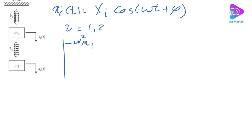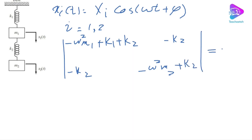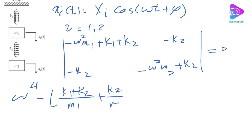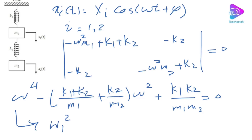Setting that determinant equal to zero gives us the characteristic equation: omega to the power of 4, minus [(k1 plus k2)/m1 plus k2/m2] times omega-squared, plus k1*k2/(m1*m2) equals 0. From this we can find omega-1-squared and omega-2-squared, the roots of this equation, and then find the natural frequencies of the system.